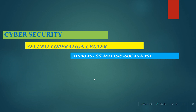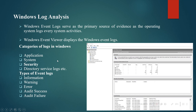Hi all, welcome to my channel Tech For. Today we'll be discussing Windows log analysis and how it is done by SOC analysts. We will get details about Windows events from Event Viewer, which collects different types of logs from a Windows system. There are certain categories of logs in Windows such as application, system, security, and from Active Directory we have directory service logs.